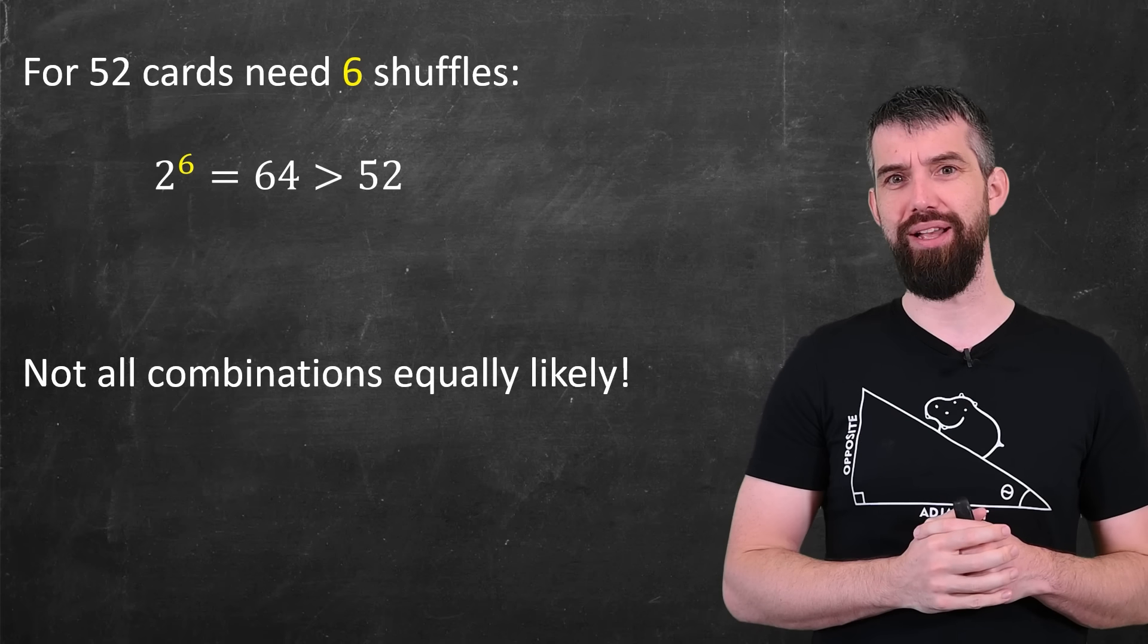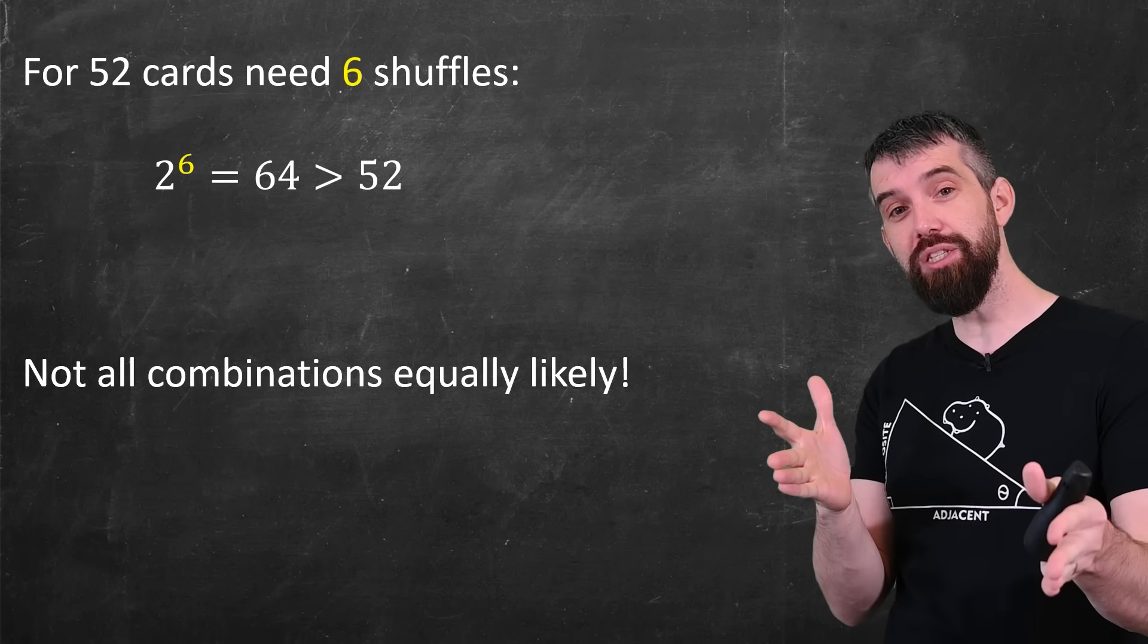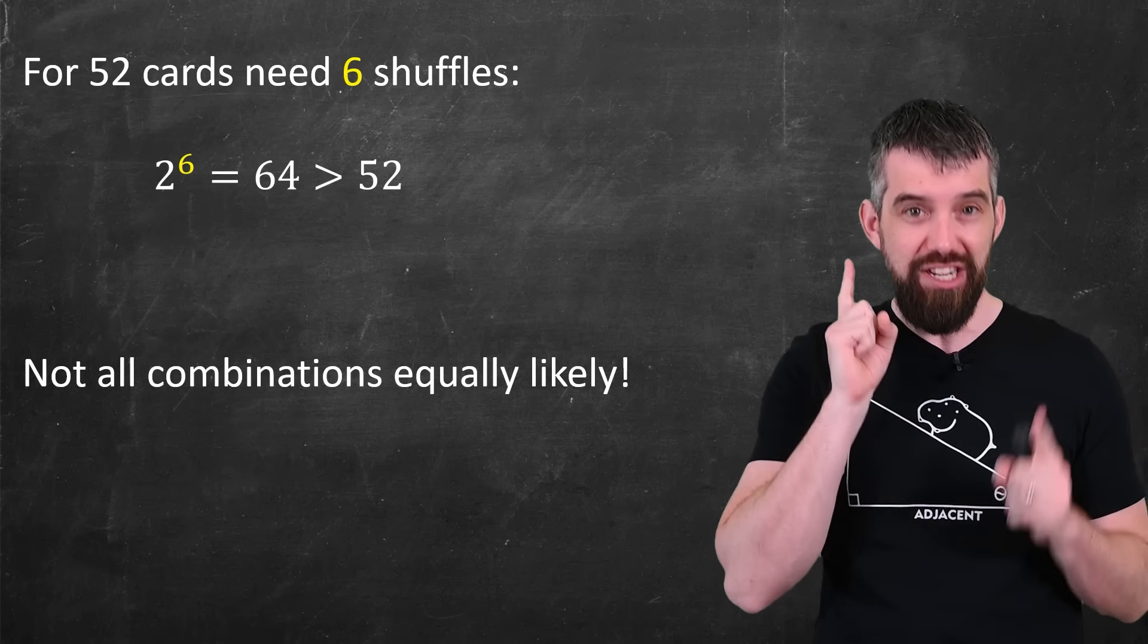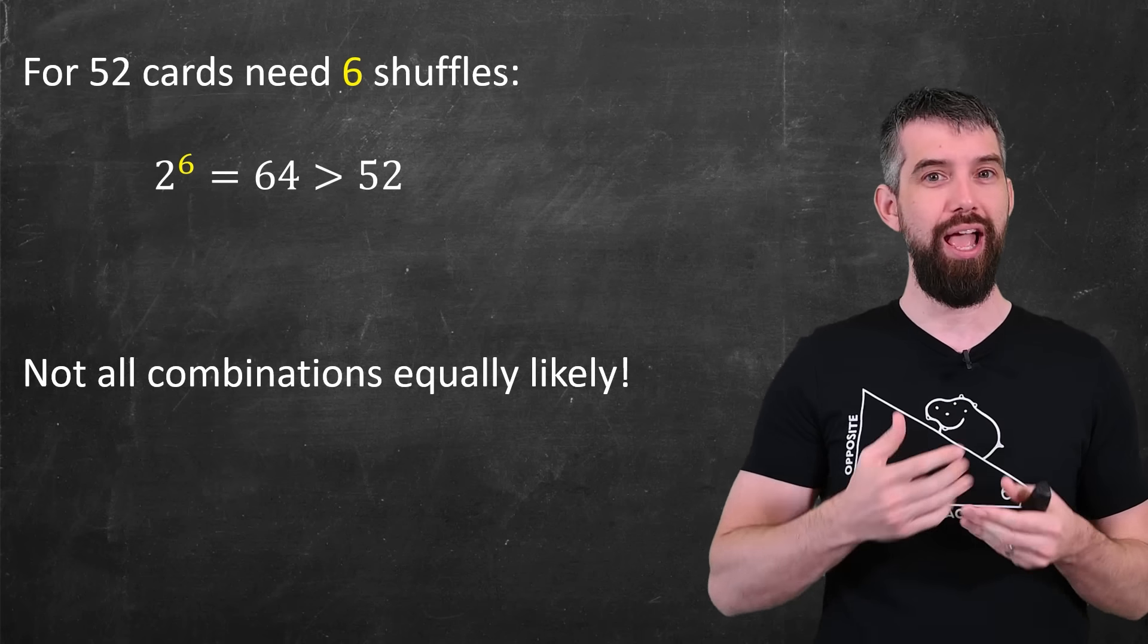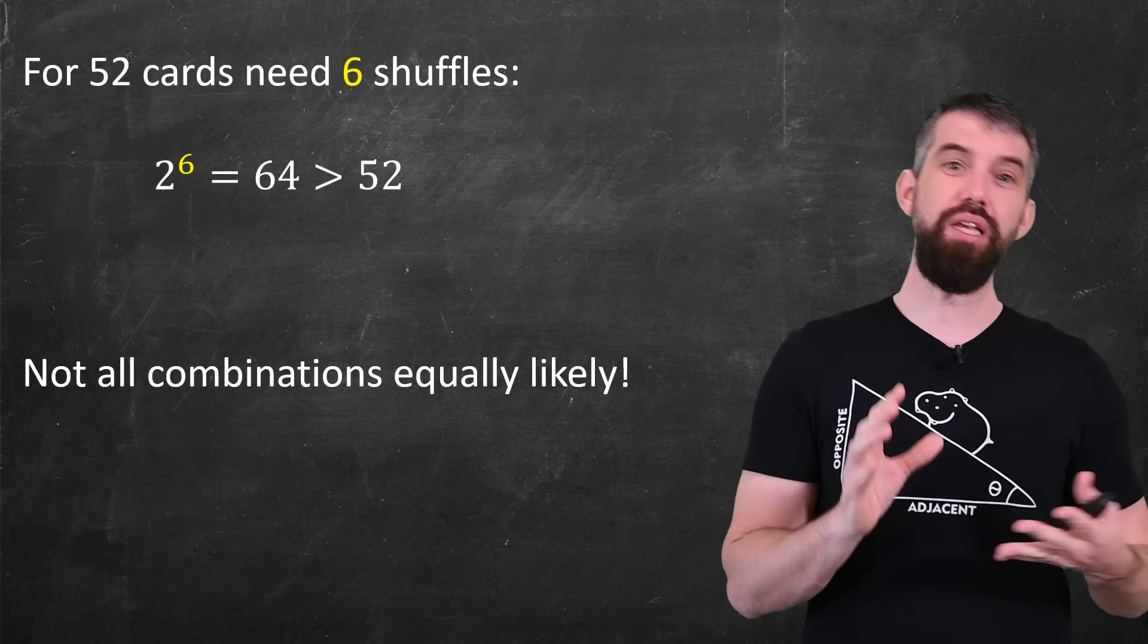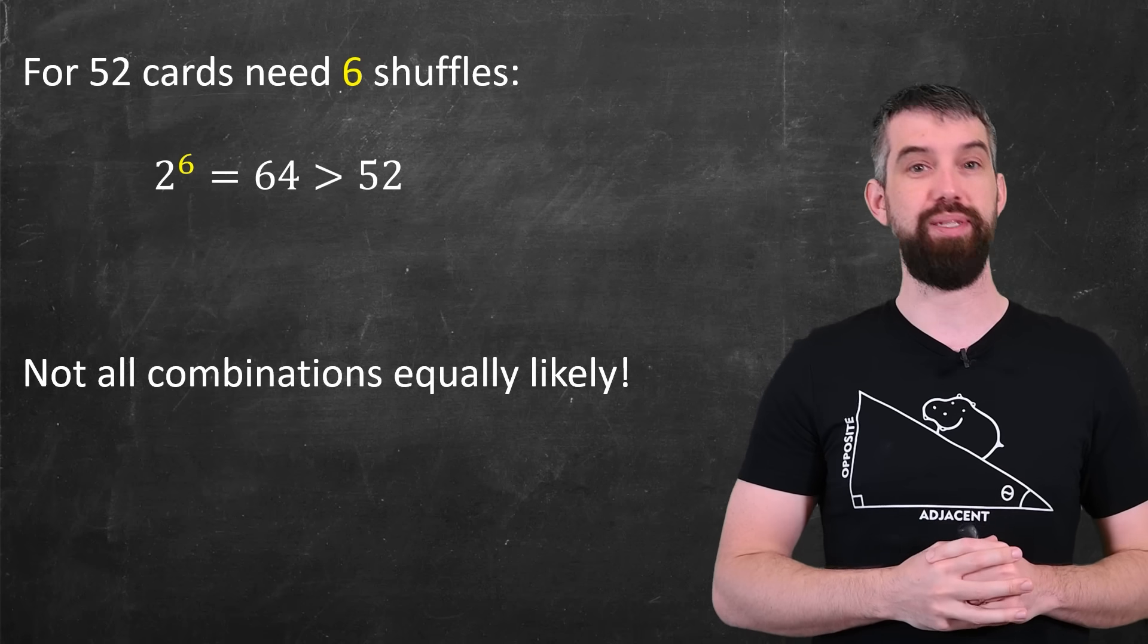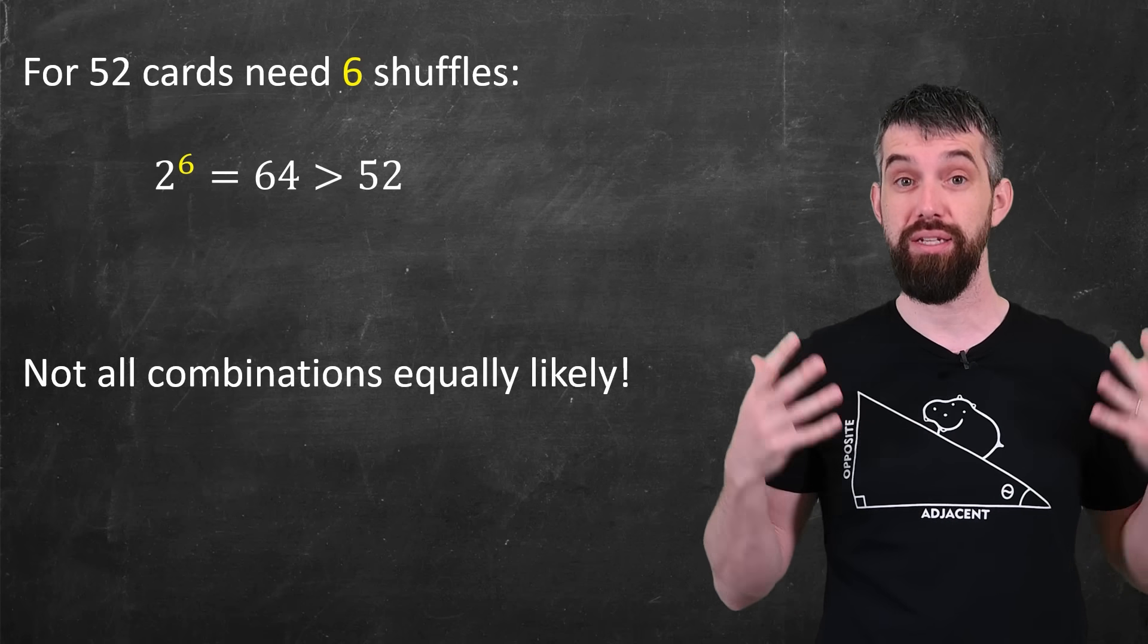And the big craziness of this video is that six shuffles is needed to make them all possible. But in a very meaningful sense, if I just do a single shuffle more, a seventh shuffle, it's going to make them all close enough to equally likely to occur that I would, for all practical purposes, say that you should shuffle seven times.